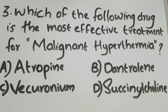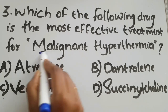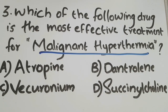Third question: which of the following drugs is the most effective treatment for malignant hyperthermia? Option A: atropine, option B: dantrolene, option C: vecuronium, and option D: succinylcholine. Malignant hyperthermia is a condition characterized by dangerously increased body temperature, severe muscle spasm, and a fast heart rate.